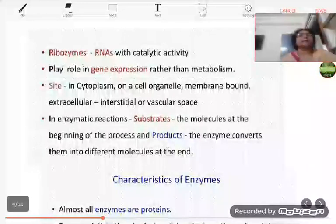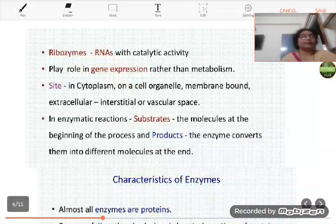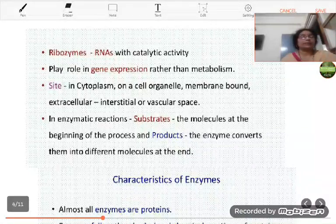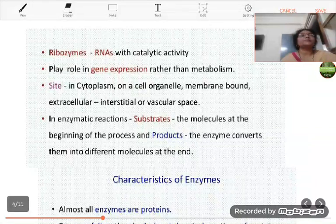Then in 1926, James Sumner isolated the enzyme urease. And in 1930, the pepsin enzyme was crystallized.